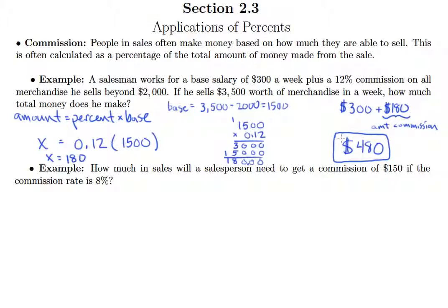Now the next example, how much in sales will a salesperson need to get a commission of $150 if the commission rate is 8%? So it asked us how much in sales will be needed? Well, remember the base is what we're taking a percentage of, and the amount in sales is what we take a percentage of when we're talking about commission.